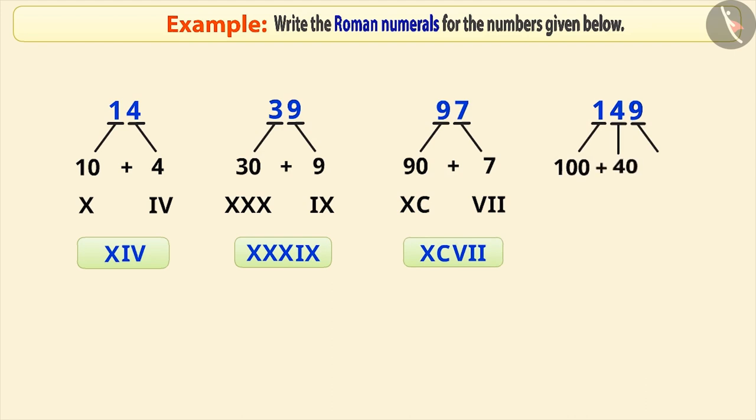149 is equal to 100 plus 40 plus 9. We write 100 like this in Roman, 40 like this and 9 like this. Therefore, writing them together will make the Roman numeral 149.